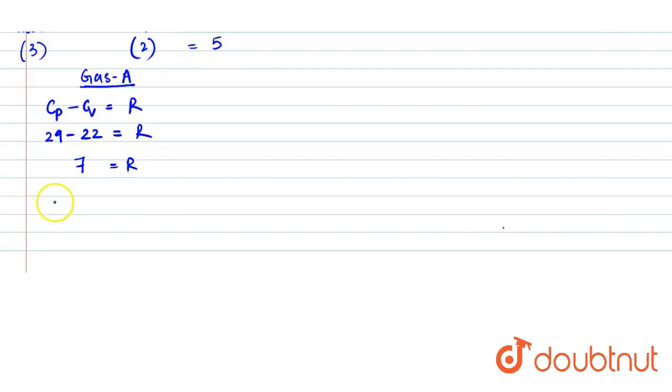We also know the relation between the Cv and the degree of freedom. Cv is written as F by 2 into R. So, the degrees of freedom in gas A is 2 times of Cv divided by R. R value is 7.